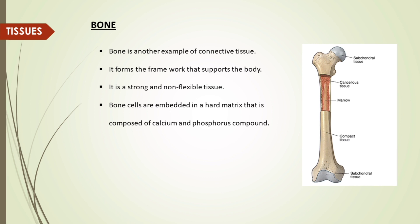Bone is another example of connective tissue. It forms the framework that supports the body. It is a strong and non-flexible tissue. Bone cells are embedded in a hard matrix that is composed of calcium and phosphorus compounds.